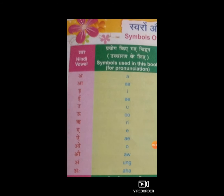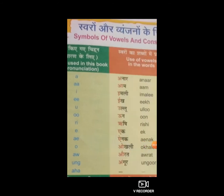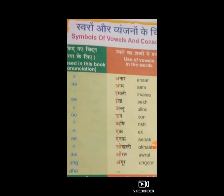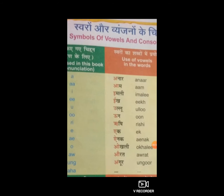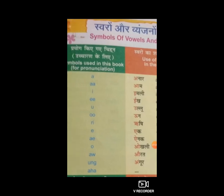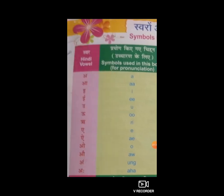स्वर पढ़ना है हमें। पहला स्वर - vowel है 'अ'। प्रयोग के लिए चिन्ह का उच्चारण होता है 'A'। अ से बनेगा अनार। यानि कि स्वरों का शब्दों में प्रयोग कैसे होता है, वह देखेंगे। Use of vowels in the word: अनार - A, N, double A, R।